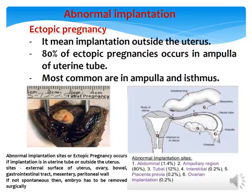Abnormal implantation outside the uterus is called an ectopic pregnancy. About 80% of ectopic pregnancies occur in the ampulla of the uterine tube — the most common site — followed by the isthmus. Other abnormal sites include the external surface of the uterus, the ovary, the gastrointestinal tract, the mesentery, and the peritoneal wall. Surgical intervention is required if the ectopic embryo does not descend.